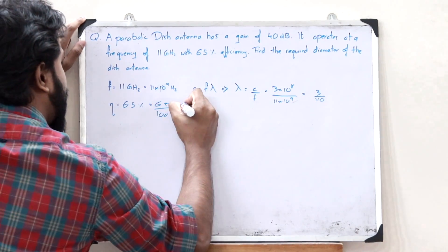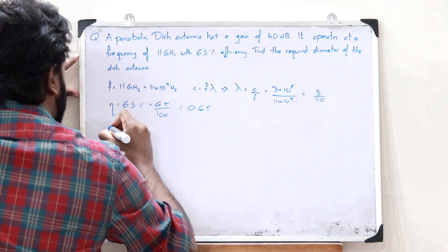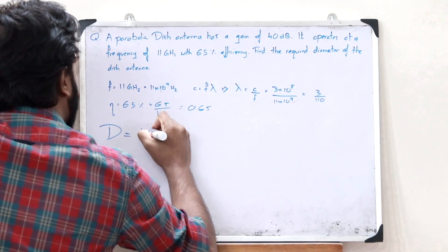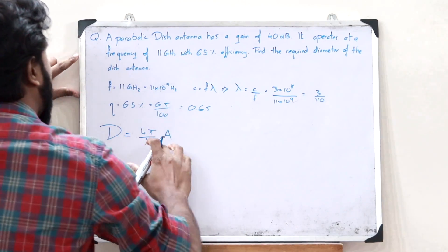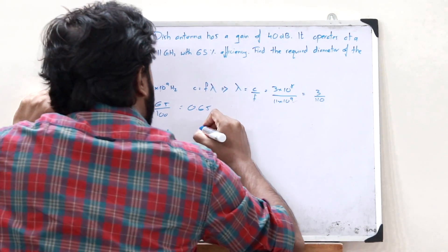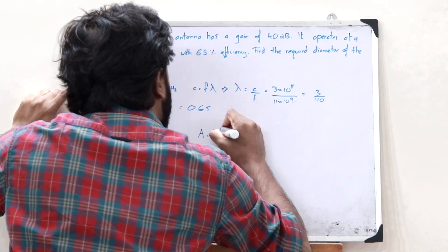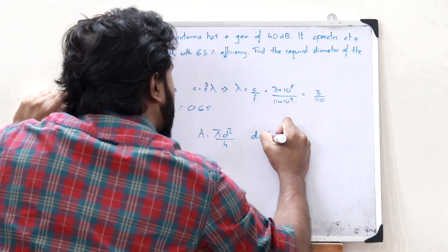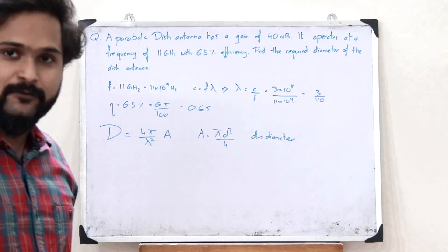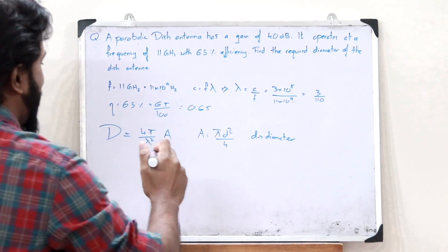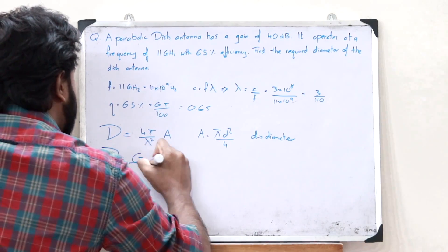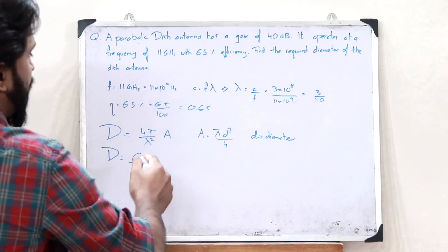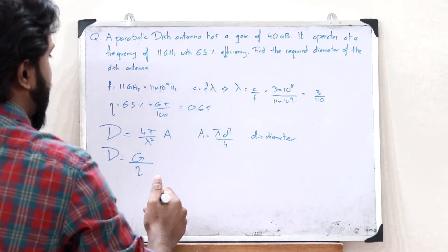The formula for directivity is D = (4π/λ²) × A, where the area A = πd²/4, and d here is the diameter — which is what we have to find. We also know the formula: D = G/η, where G is the gain and η is the efficiency. So we can compare these two expressions to find the diameter d.